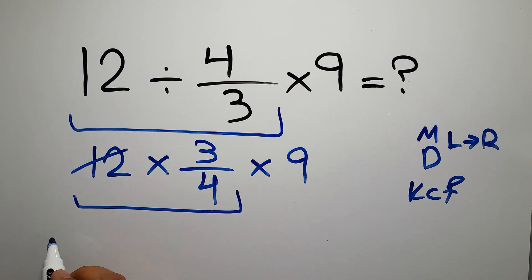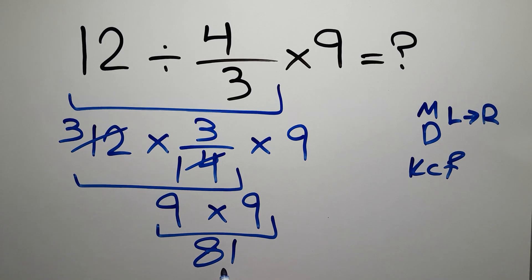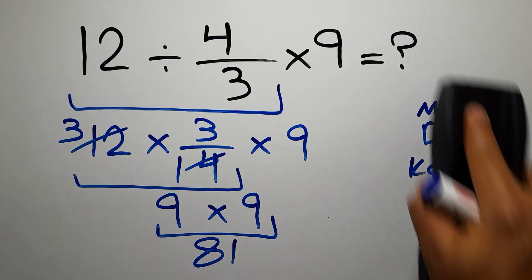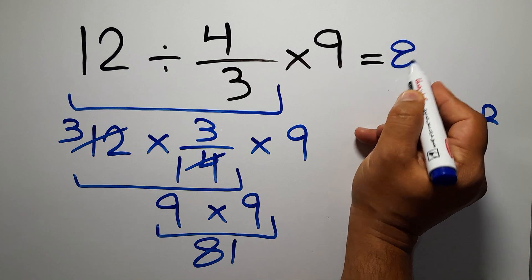12 divided by 4 gives us 3, and 4 divided by 4 is just 1. So we have 3 times 3, which equals 9. And 9 times 9, which gives us 81. And this is our final answer to this problem. The correct answer is 81.